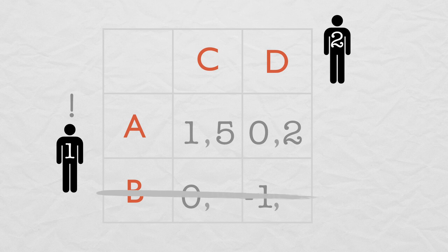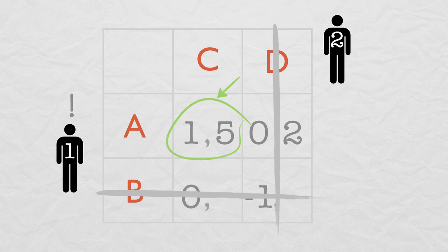So we can delete B as an option. Then we see that Player 2 must choose C, as A, C gives him a larger payoff than does A, D. This might be a dominant strategy equilibrium depending on Player 2's payoffs, but it doesn't have to be.